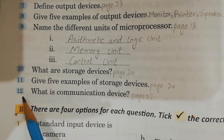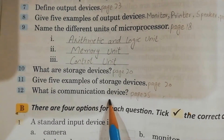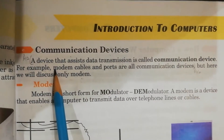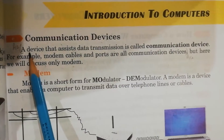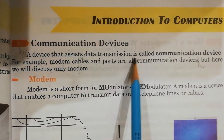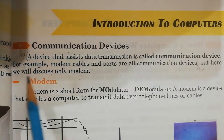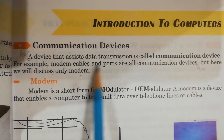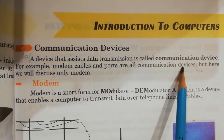Question No.12: What is a communication device? Its answer is on page No.25. A device that assists data transmission is called a communication device. For example, modem, cables and ports are all communication devices.